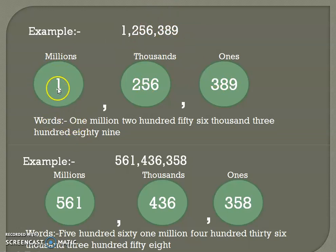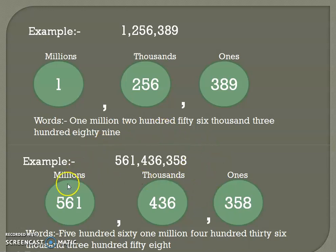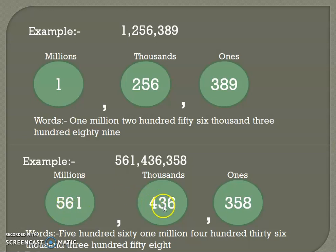Now we'll write this number in words. How will you write it? One million — because this is in the millions period — one million two hundred fifty-six thousand three hundred eighty-nine. Again, this number has nine digits: three numbers in the millions period, three in thousands, three in ones — 561 million, four hundred thirty-six thousand, three hundred fifty-eight.